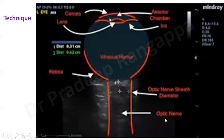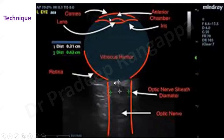Sonologically, you would see the anterior chamber, the lens, the vitreous humor, and the optic nerve as a black structure emanating from the optic disc. The retina is just adjacent to it. This is where the measurements are done.